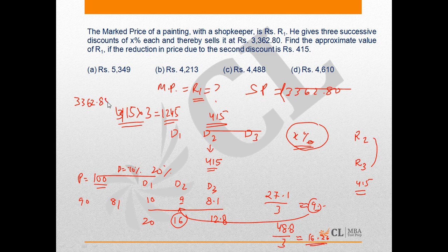When we add 1245 to 3362.80, we get an answer close to 4610. Therefore, option D is the correct answer.